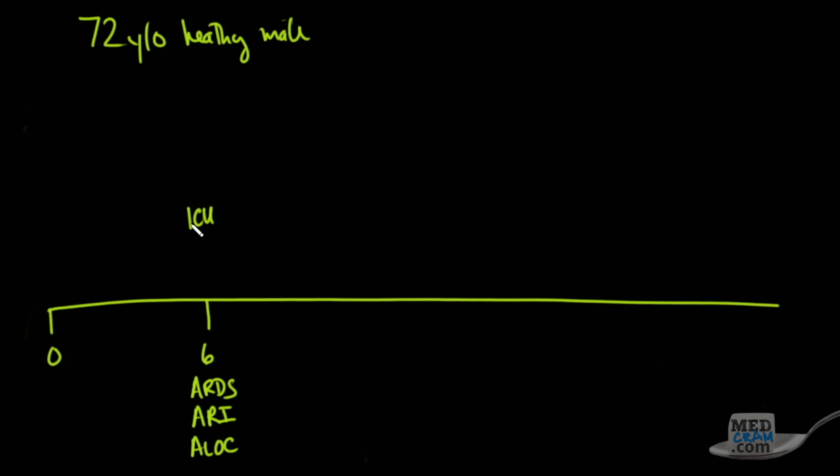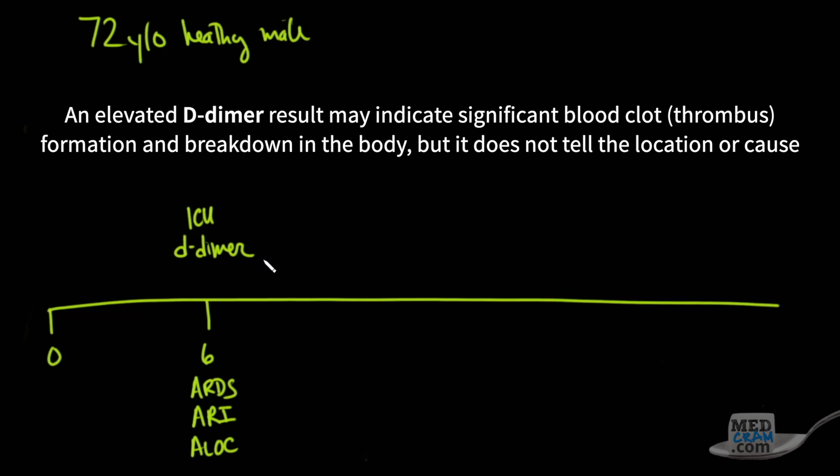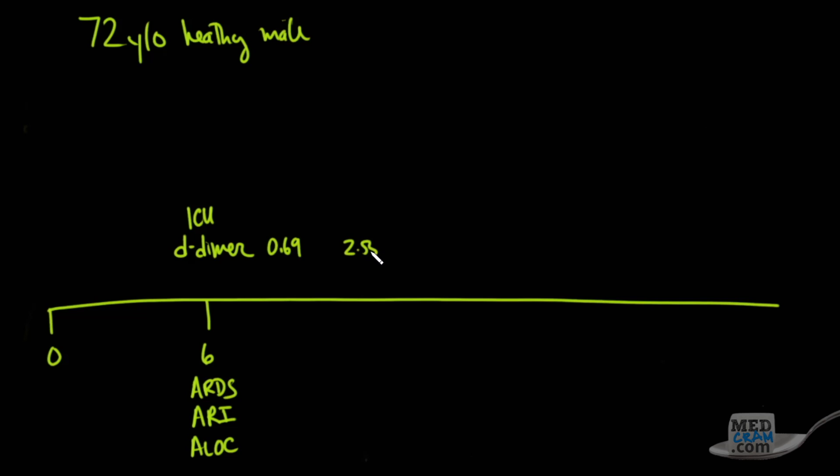One of the things that they measured was something called a D-dimer, and on that first day, the D-dimer was 0.69, which is just barely elevated, but four days later, it was 2.55. 11 days into it, it went to 2.81. 21 days later, it was 20.63, and this is pretty high, and this is actually what I've been seeing in my COVID-19 patients as well. Then at day 24, it came back down. We'll talk about what happened on day 21, because when they started to see these numbers rising in a D-dimer, what that usually means is that there's some sort of coagulation occurring.